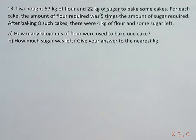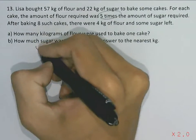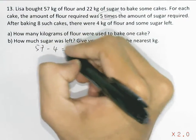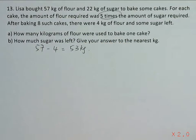Since we know that there were four kilograms of flour left, the amount that she used would be 57 minus 4. So she used 53 kg of flour to bake the eight cakes.